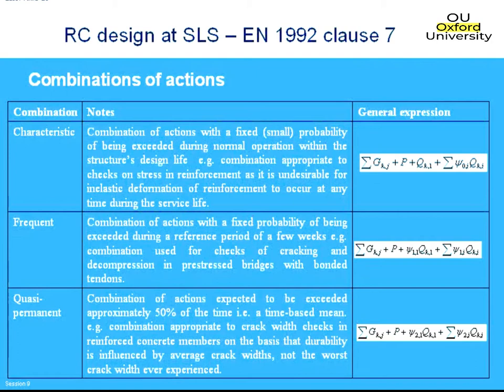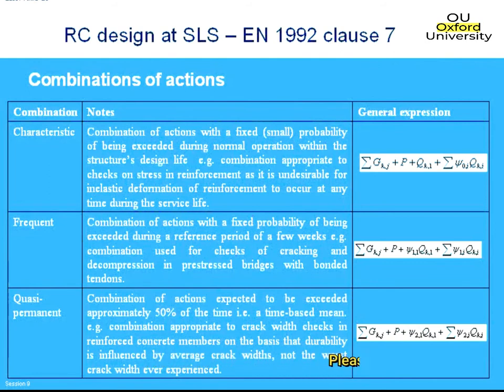The frequent combination is slightly less onerous than the characteristic combination and is generally used for stress checks in pre-stressed bridges and pre-stressed sections, because we are a little more concerned about pre-stressed sections. Finally, the quasi-permanent load combination represents just an average load on the bridge at any point in time - for a typical bridge, live load under the quasi-permanent combination will actually be zero. The quasi-permanent combination is used for crack width checks for reinforced concrete sections.